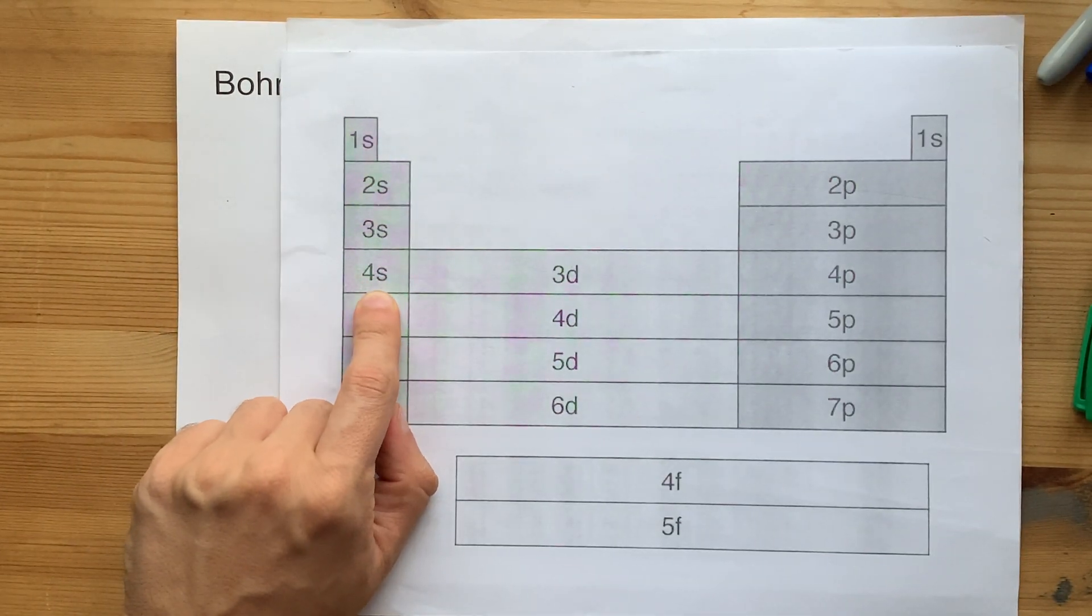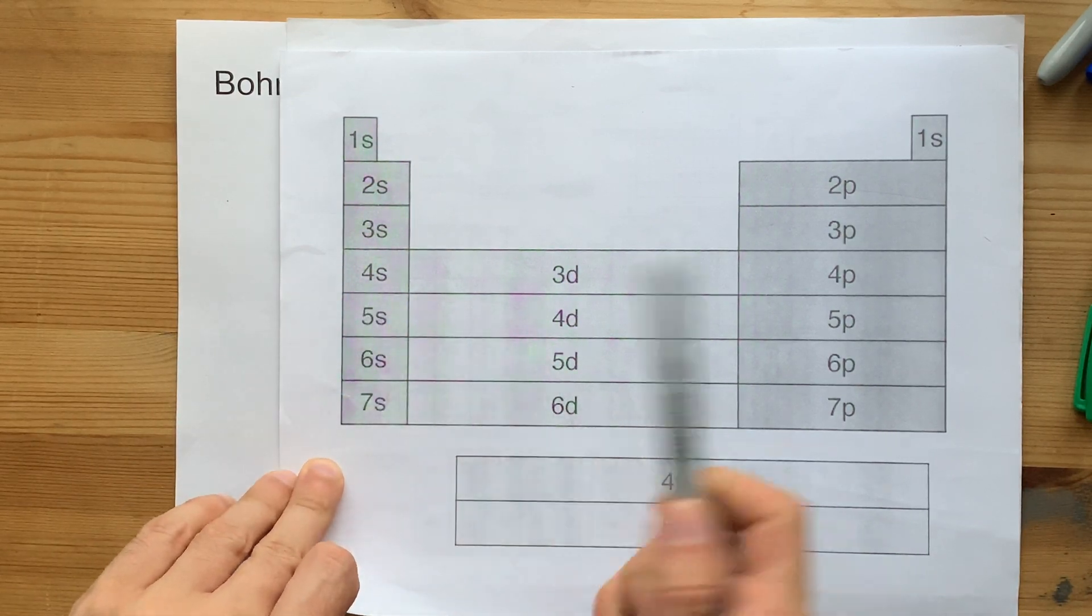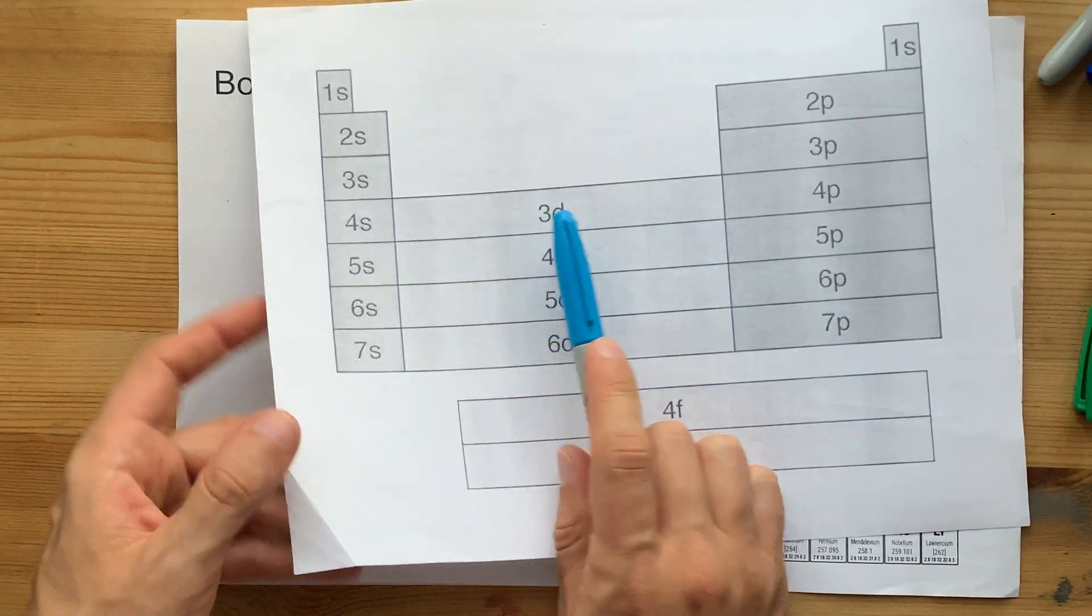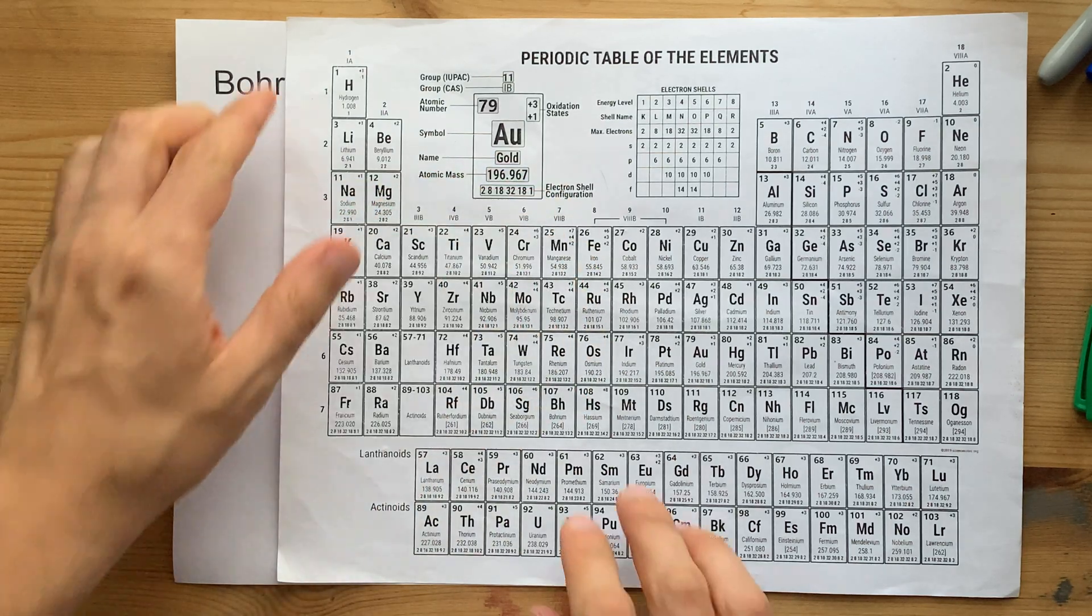What matters is that these two electrons, number 19 and 20, go into the fourth shell, but these ones from scandium all the way to zinc go back into the third shell, which can actually hold 18 electrons.